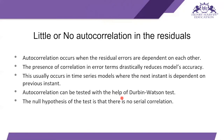In autocorrelation, the output of the first row should not affect the output of the second row. When using the linear regression model, there must be no autocorrelation — the previous output should not affect the next output, and the next output should not depend on the previous output. This is the fifth and final assumption for the linear regression algorithm.